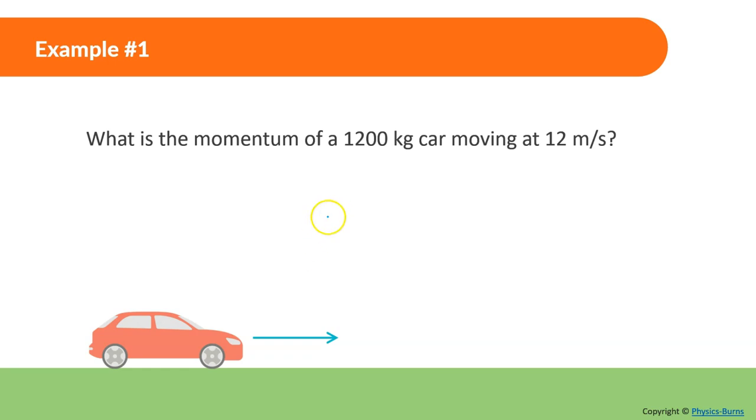Moving on. What is the momentum of a 1200-kg car moving at 12 m/s? So momentum is equal to the mass times velocity. We could pretty much just plug that in. 1200 times the velocity of 12. Put that into my calculator. And I get 14,400 kilograms times meter per second.